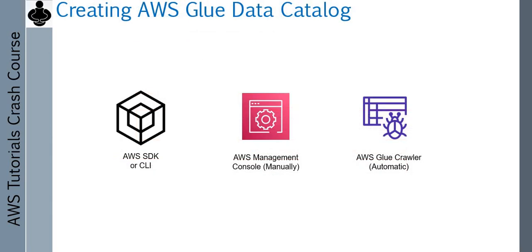So these are the pieces of information you keep in your data catalog table structure. Now, how do I create this Glue Data Catalog table? There are three methods you can use. You can use AWS SDK or CLI to create a Glue Data Catalog — you can run a CLI or make an API call. You can also create a catalog through the AWS Management Console, which we are going to do in this lab. You can also use AWS Glue Crawler to create the catalog, and we'll cover that in upcoming videos.